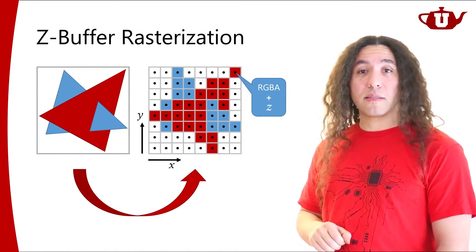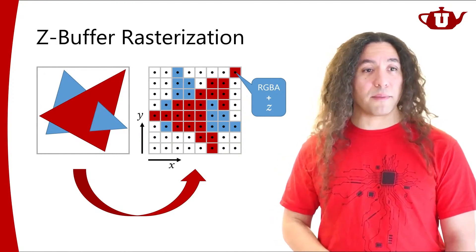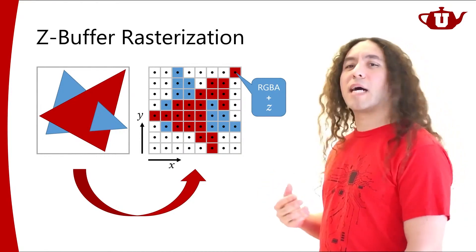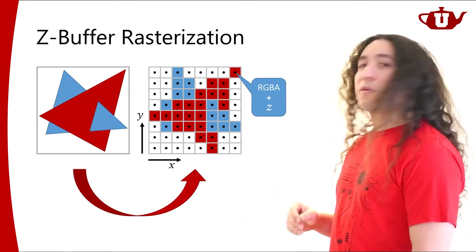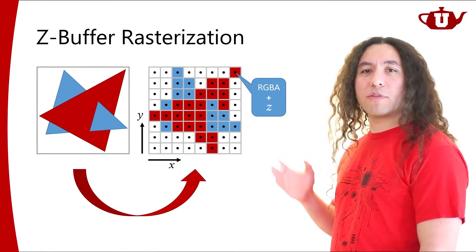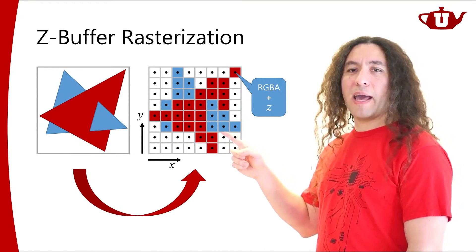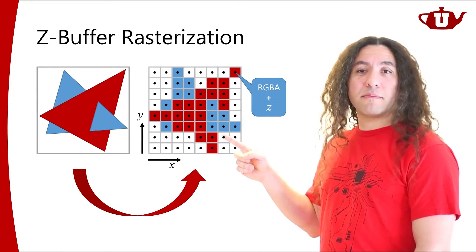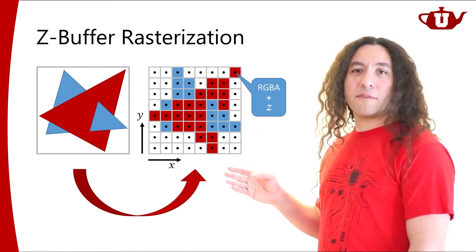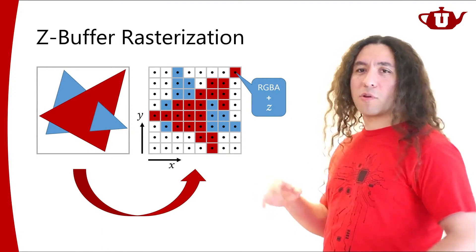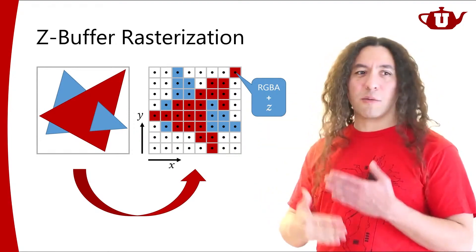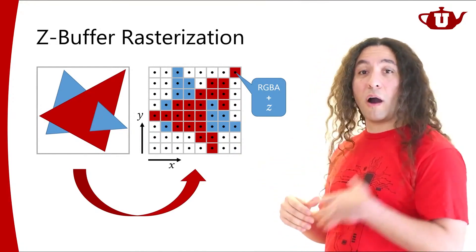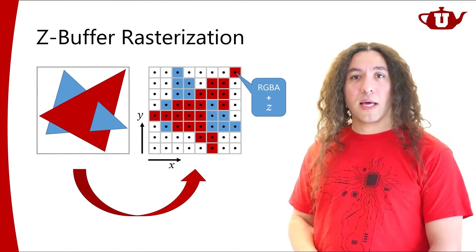There are some nice things about this algorithm and some not-so-great things. Based on the order you draw triangles, for pixels with overlapping triangles you may shade those pixels multiple times — it's similar to the painter's algorithm in that concept, but you don't need to pre-sort. You can do the sorting on the fly using the Z-buffer. That's the key advantage of Z-buffer rasterization.